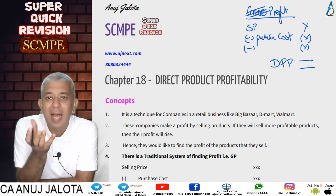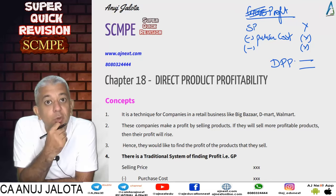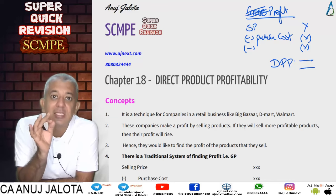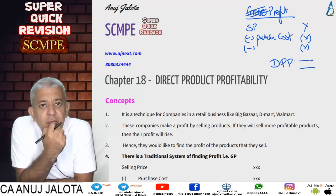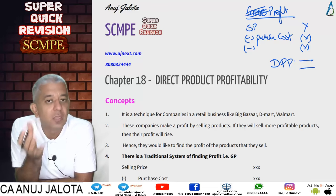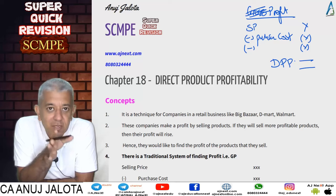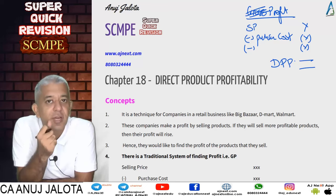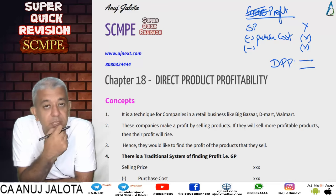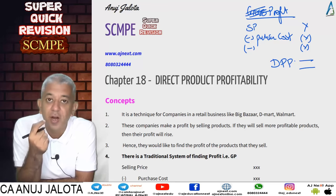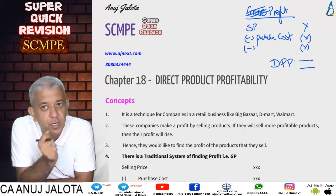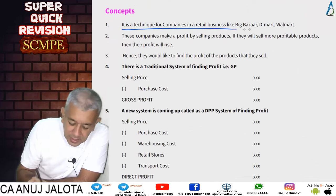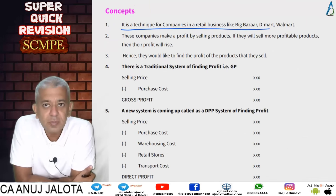Hence the concept of DPP (Direct Product Profitability) was introduced, whereby we allocate other costs — beyond just purchase cost — to individual products to find out true and fair profit. This true and fair profit is called Direct Profit. DPP takes into account factors like the space a product occupies, its inventory turnover, and whether it requires refrigeration. It is a technique used by retail companies like Big Bazaar, D-Mart, and Walmart.